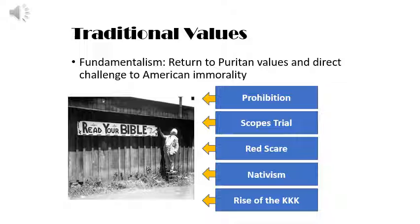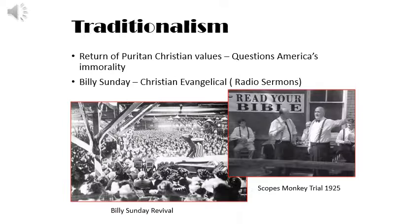Unit 3 Lesson 2 vocabulary. During this lesson we'll examine traditional values including prohibition, the Scopes Trial, the Red Scare, nativism, and the rise of the KKK, beginning with fundamentalism — which wanted a return to Puritan values and a direct challenge to American immorality. Traditionalism was a return of Puritan Christian values, originating in the 1600s with the Puritans who came across the Atlantic and settled in North America. They began to question America's rising immorality, led by Christian evangelical radio sermons throughout the country.